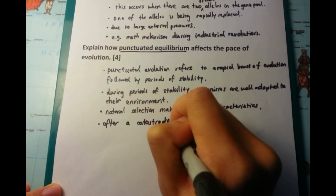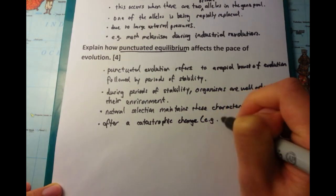So that particular point refers to the fact that natural selection maintains these characteristics. So that's the stability part of the punctuated equilibrium theory.